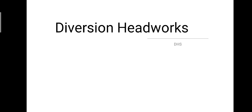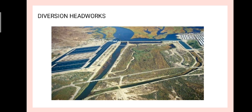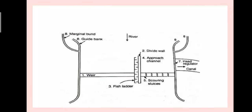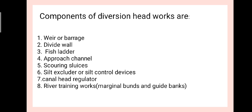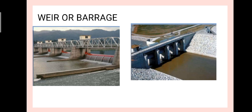Today we are going to deal with the topic diversion headworks — its components and the functions of those components. This is a typical diversion headwork; in this figure all the components are marked. The main components of a diversion headwork include weir or barrage, divide wall, fish ladder, approach channel, scouring sluices, silt excluder or silt control devices, canal head regulator, and river training works.